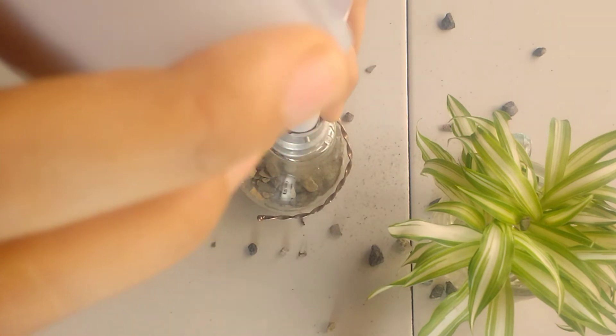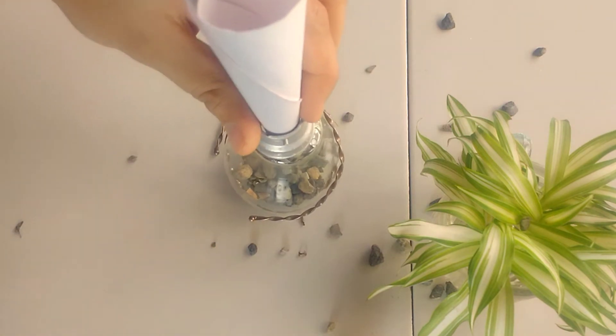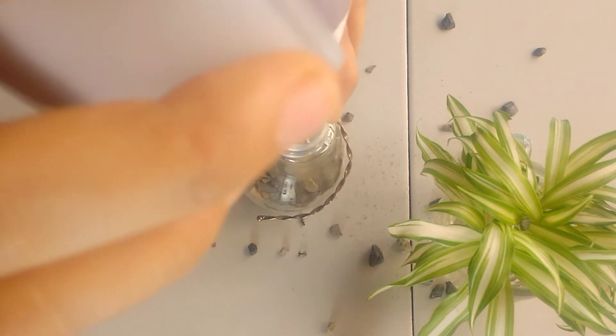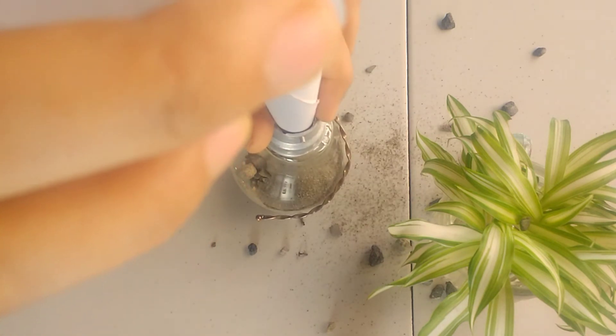Now we will be pouring in our second layer, which is sand. Sand also helps in water drainage and prevents the plant roots from rotting.